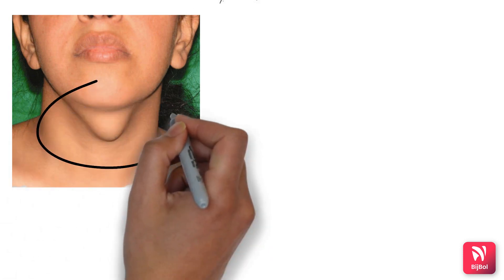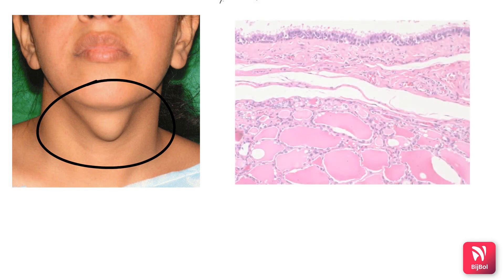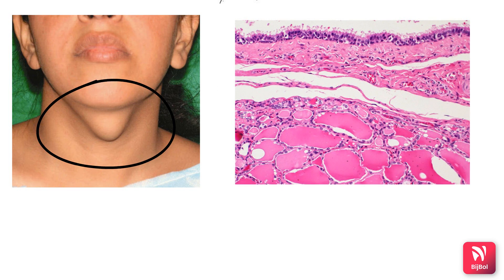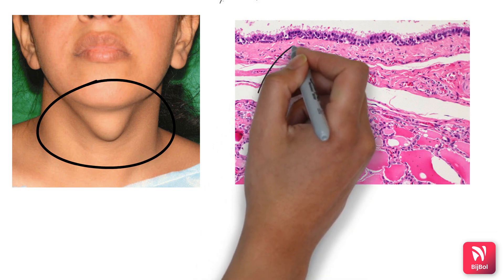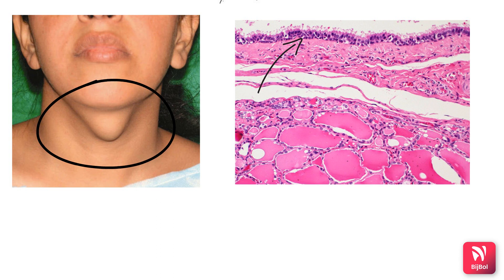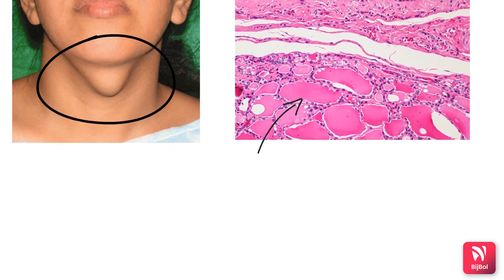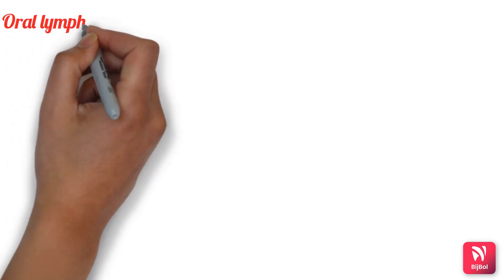Clinically, the thyroglossal duct cyst appears as a midline neck mass at or below the level of the hyoid bone. It characteristically moves upward with swallowing, and sometimes shows neck or throat pain and dysphagia. Histopathologically, these cysts are lined by columnar or stratified squamous epithelium, and the connective tissue wall shows patches of thyroid follicles. Sometimes mucous glands are also seen.